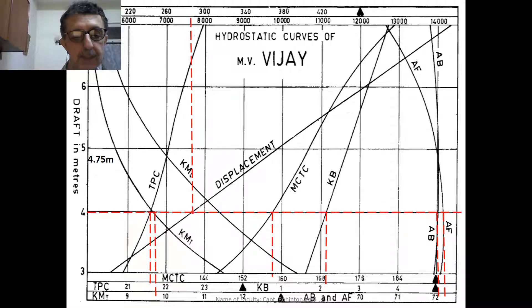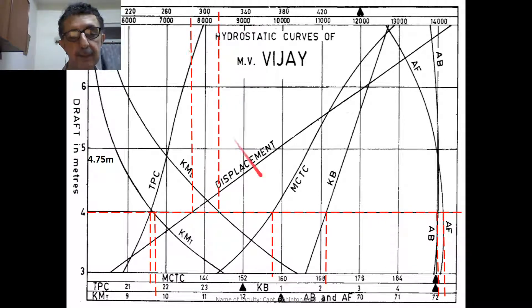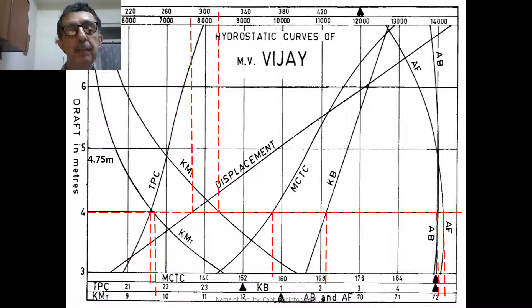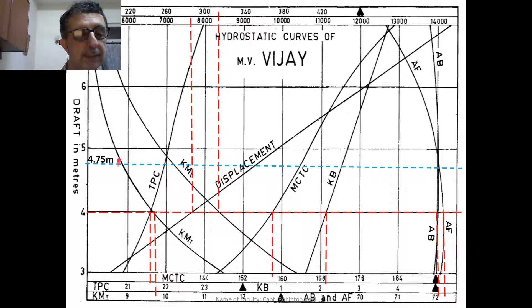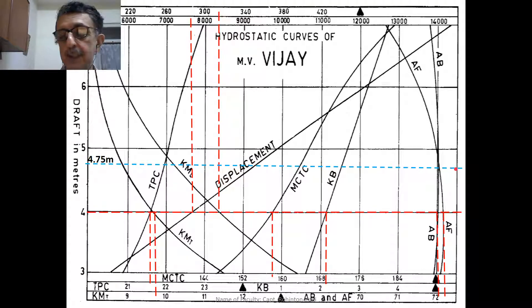The displacement reads approximately 7700 metric tons, and KM longitudinal works out to about 315 meters. Now, if you need values for 4.75 meters, measure the distance between the 4-meter and 5-meter marks with a ruler and mark 4.75 meters by interpolation. Having marked 4.75 meters on both sides, draw a line joining these two points and read off all curve values.